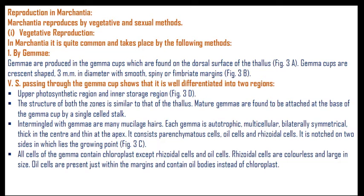Gemma cups are crescent-shaped, 3 mm in diameter, with spiny fringed margins. A vertical section through the gemma cup shows it is differentiated into two regions: the upper photosynthetic region and the inner storage region, similar in structure to the thallus. Mature gemmae are attached at the base of the gemma cup by a single-cell stalk. Interspersed with gemmae are many mucilaginous hairs. Each gemma is autotrophic, multicellular, bilaterally symmetrical, and possesses chlorophyll.